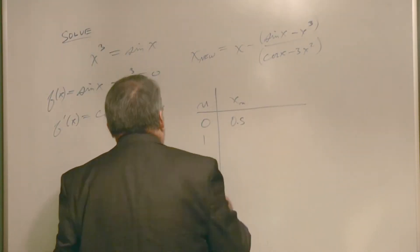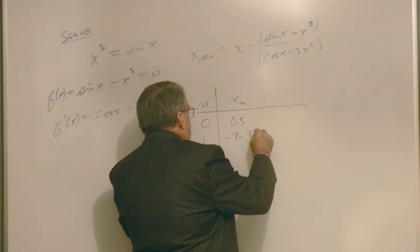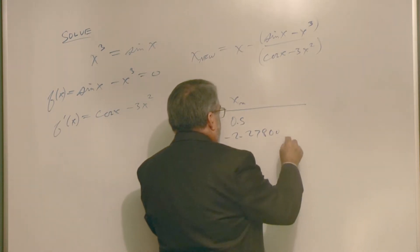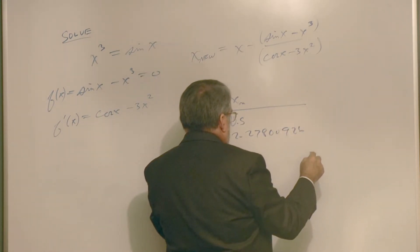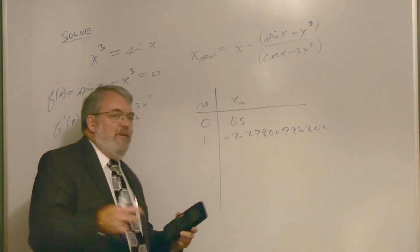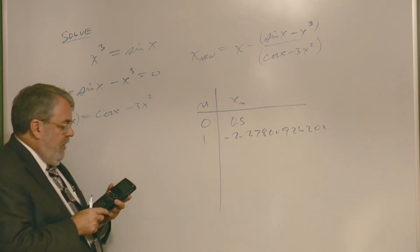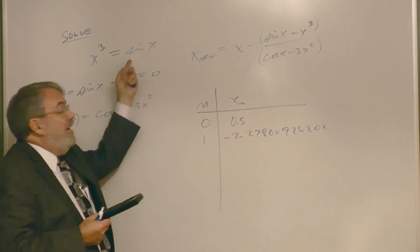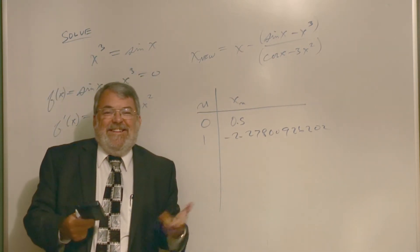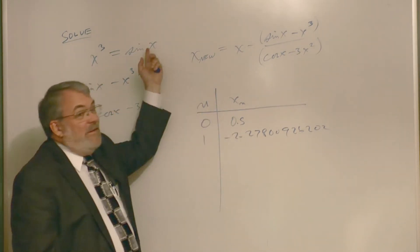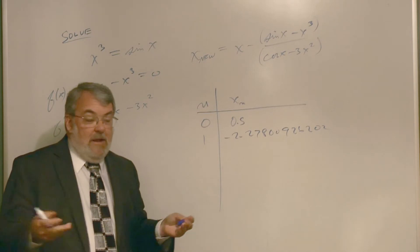So why is that so odd? Minus 2.27, 800, 926, 202. I'm using all the decimal places I have. You may have fewer, so that's the way it goes. Well, wait a minute. We said x has to be between minus 1 and 1, didn't we? And this number clearly isn't. That cannot possibly be an answer to that equation. And so now what? Now what do you do?